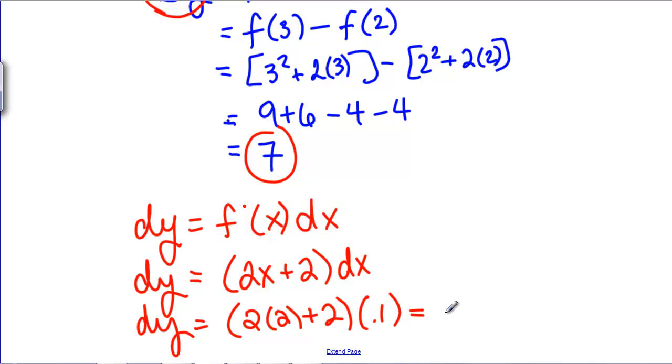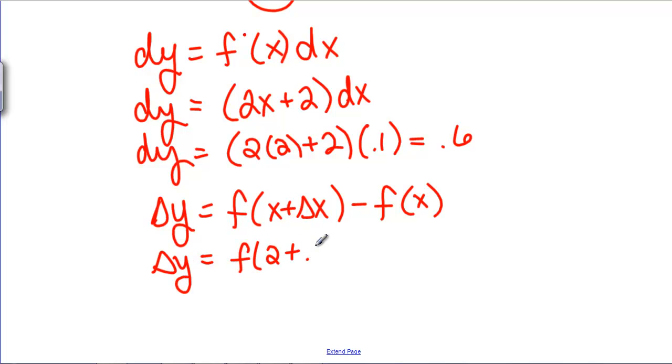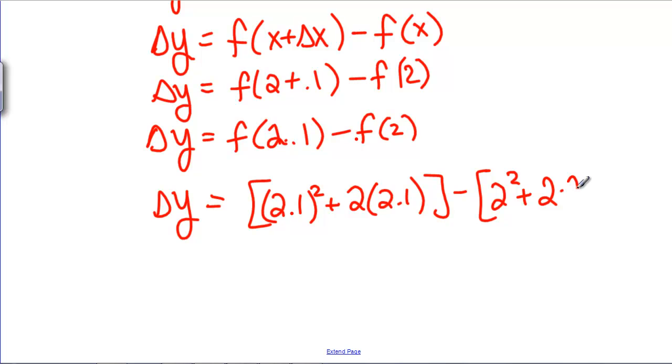So this is 6 times 0.1 so 0.6 and then comparing that with the actual change in y which is f of x plus change in x minus f of x which is f of 2 plus 0.1 minus f of 2 which is f of 2.1 minus f of 2 which is 2.1 squared plus 2 times 2.1 minus 2 squared plus 2 times 2.